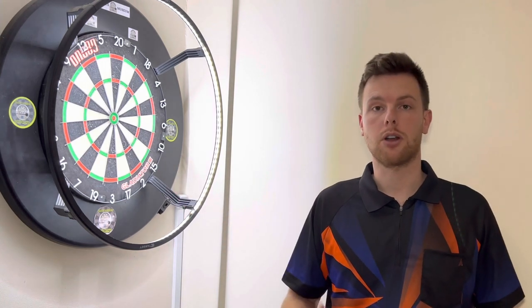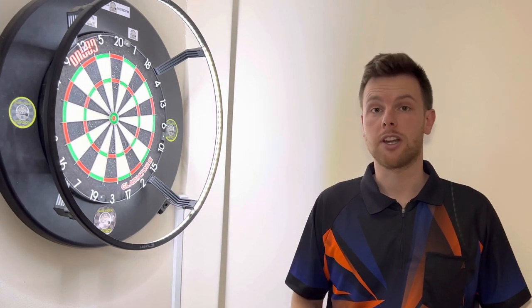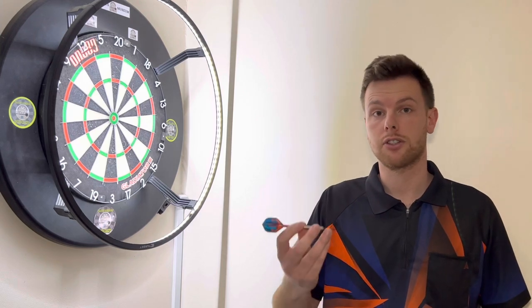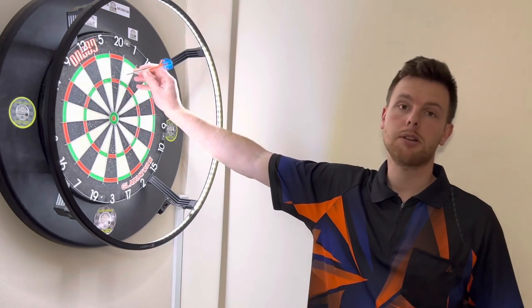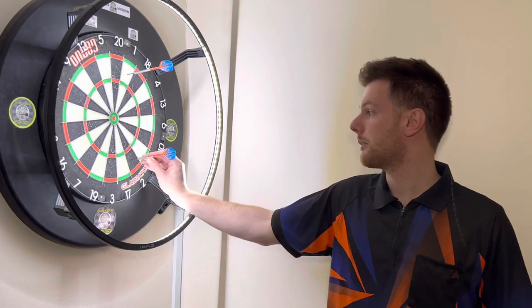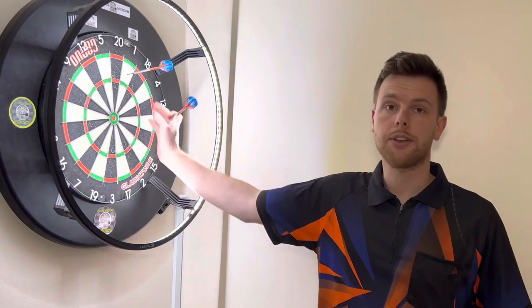It's called Round the Clock. The basic way of playing Round the Clock is very simple. The first dart you throw, you aim at number one. The second dart you throw, you aim at number two. And the third dart you throw, you get the picture. You're just working around the numbers.